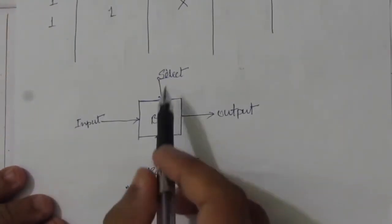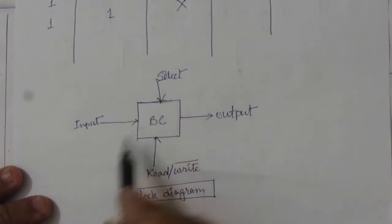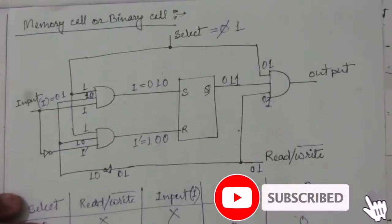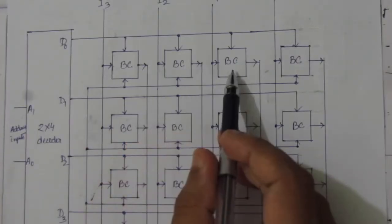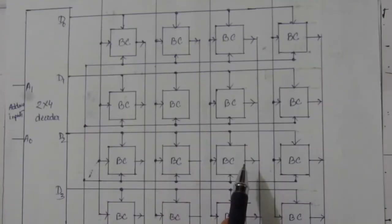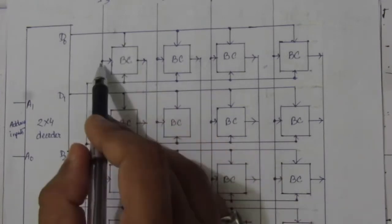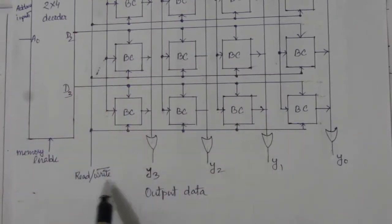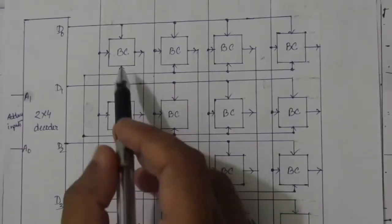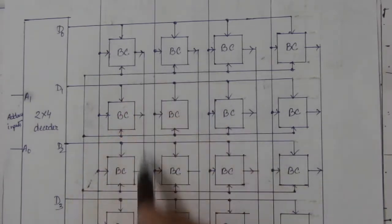The binary cell has three inputs: the select input, the input data bit, and the read/write bar signal, with a single output. When the read operation is active, whatever content is stored in the SR flip-flop output (Q) will be available at the output. When the write operation is active, the output is disconnected and the input data is written into the flip-flop.